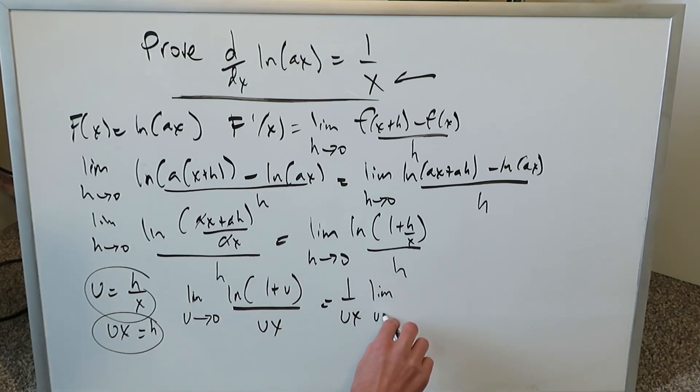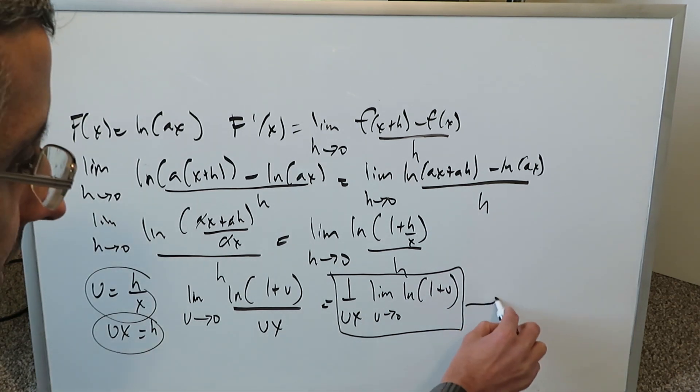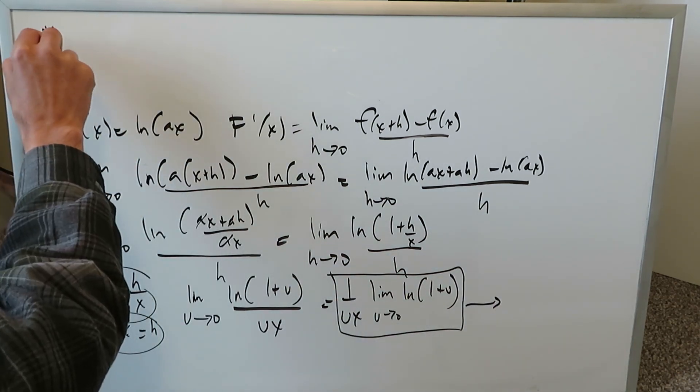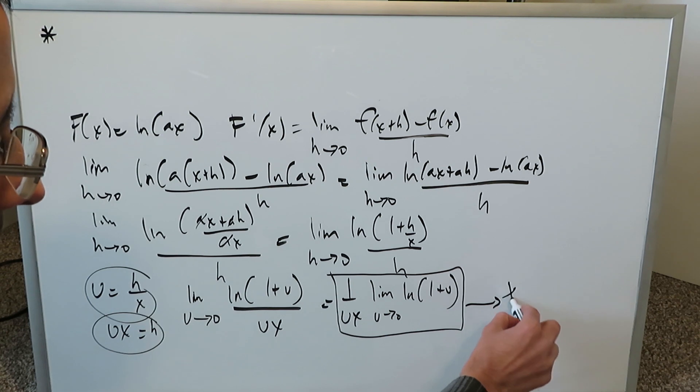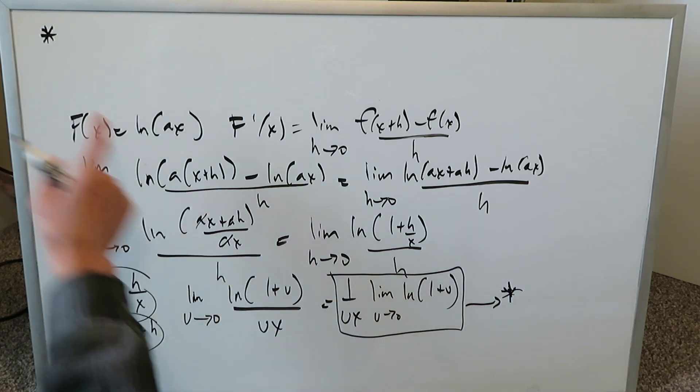We have a limit as u approaches 0. We have ln(1 plus u). So we've done all of this entire procedure and it has brought us to this point over here. We're not too far away from completion. Our procedure will continue from right over here and we'll bring it here on the top. We have a little bit of this symbol to show you that we're coming here.